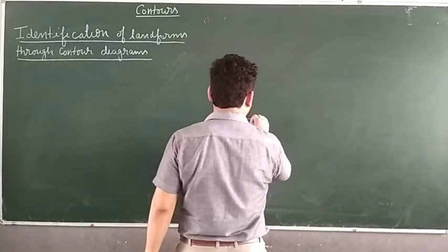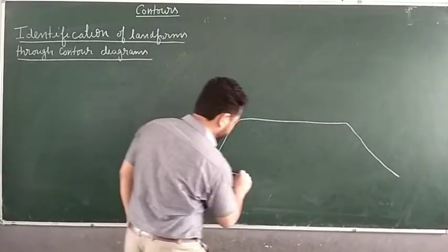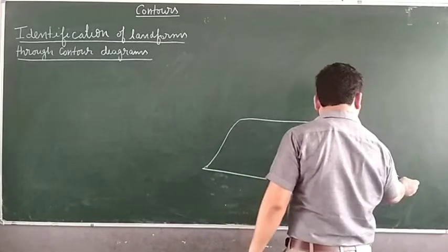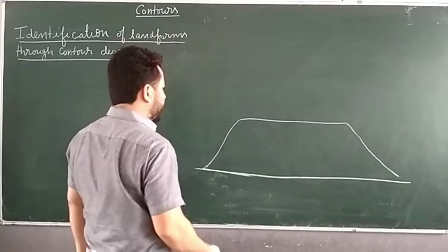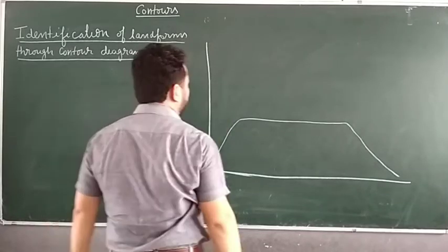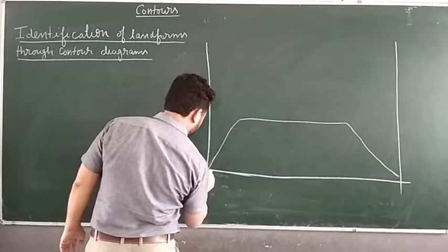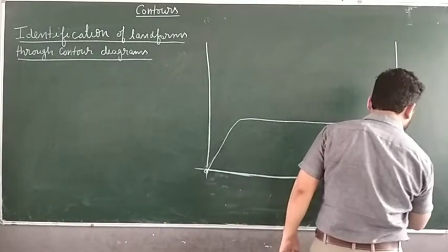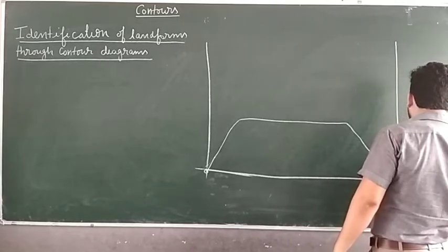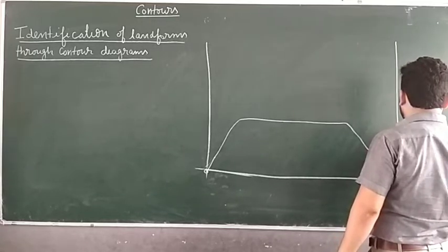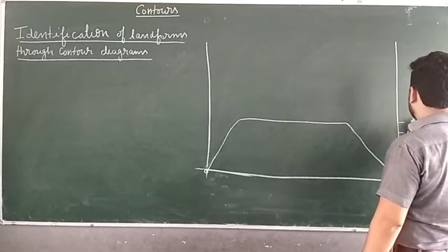We will draw a plateau. Again, we will draw lines on two sides — here also and here also. From here 0, here also 0. Here we will take 100 meters, here 200 meters, here 300 meters — the space should be equal between these height intervals or contour line intervals. This is 400 meters, and this is 500 meters. This tells us the contour line interval and the spacing density.